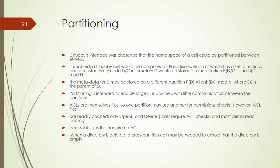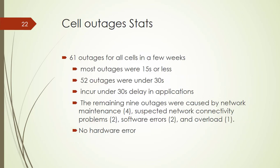Now we have discussed proxies, partitioning, and the system structure. Next we discuss the usage statistics and behaviors of Chubby locks. There were 61 outages for all cells in a few weeks. Most outages were 15 seconds or less, and 52 outages were under 30 seconds, causing under 30-second delays in applications. The remaining nine outages were caused by network maintenance, four by suspected network connectivity problems, two by software errors, and one by overload.